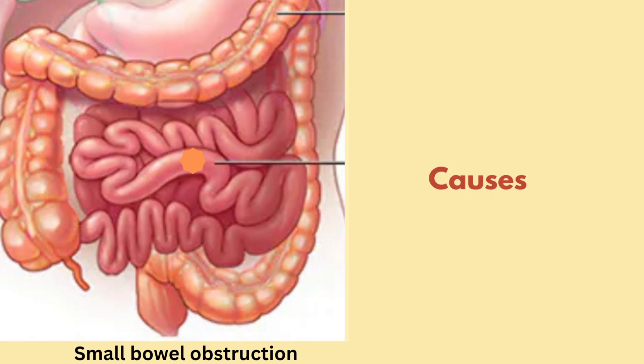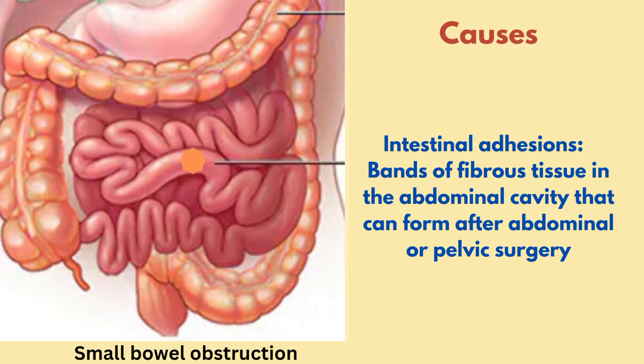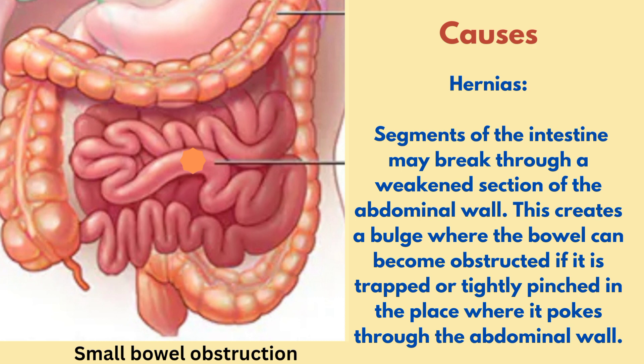Now let us see the causes of this condition. The first cause is intestinal adhesions — bands of fibrous tissue in the abdominal cavity that can form after abdominal or pelvic surgery. The second cause is hernia, where a segment of the intestine may break through a weakened section of the abdominal wall, creating a bulge where the bowel can become obstructed if it is trapped or tightly pinched where it pokes through.